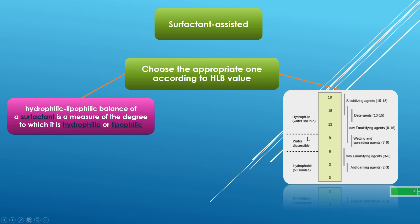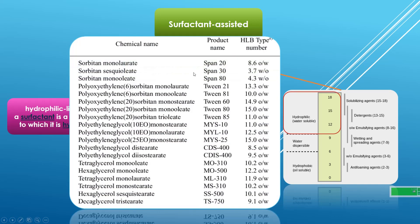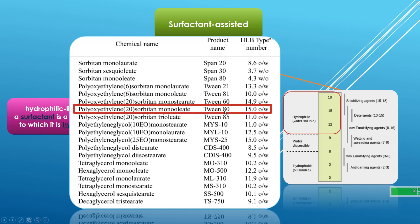I should choose hydrophilic surfactants with an HLB greater than 10 to improve hydrophilicity. This table shows the HLB values of some common surfactants — for example, Spans, Tweens, and others. In this project, I chose Tween 80 with an HLB of 15.